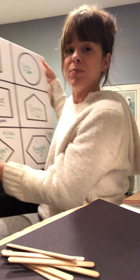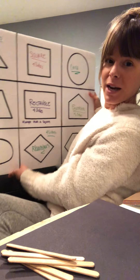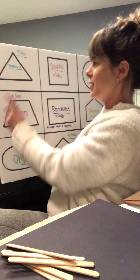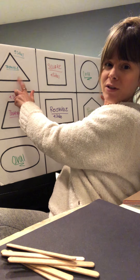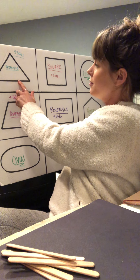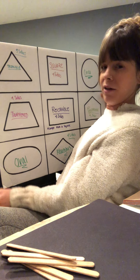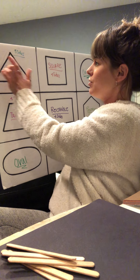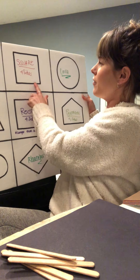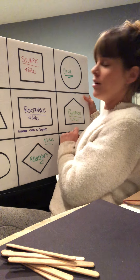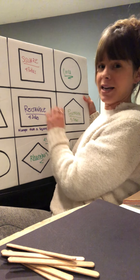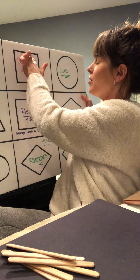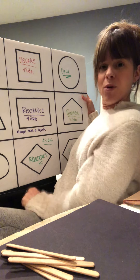So I have this big giant board right here with a bunch of different shapes on it. Let's go over them. First, we have a triangle. How many sides does the triangle have? One, two, and three. Then we have our square. Let's count the sides on the square: one, two, three, and four.